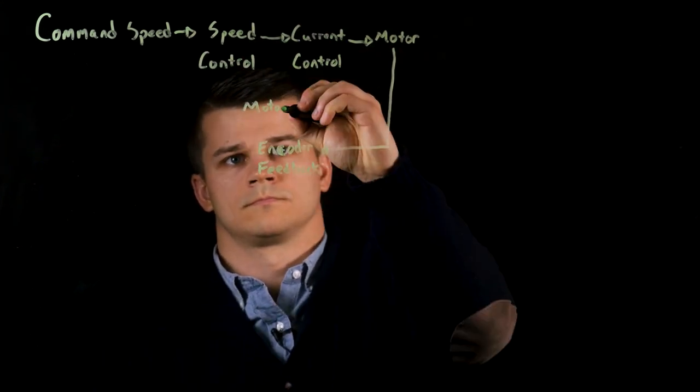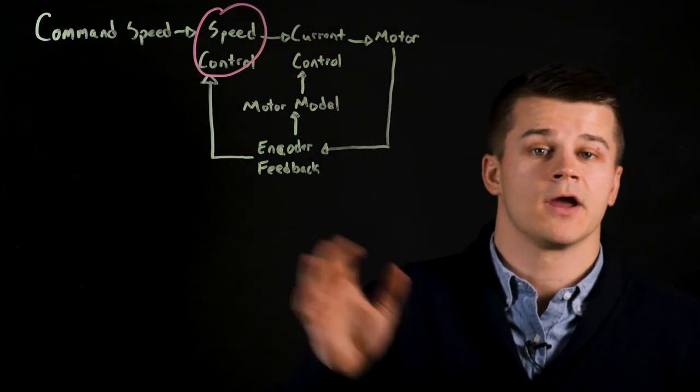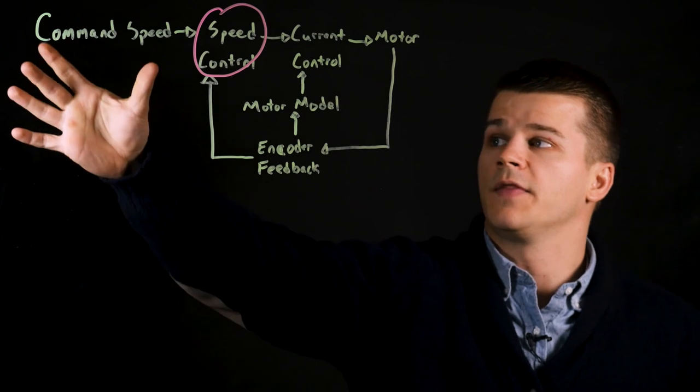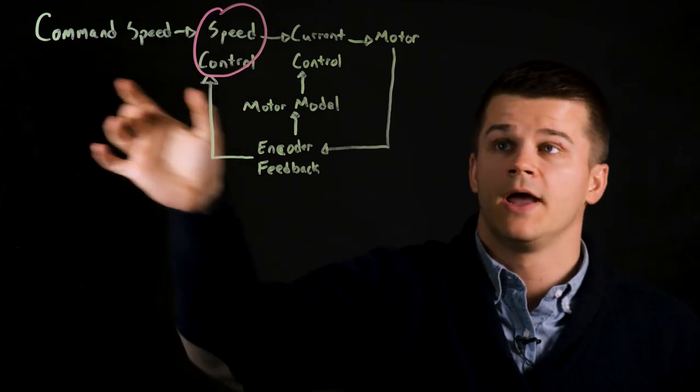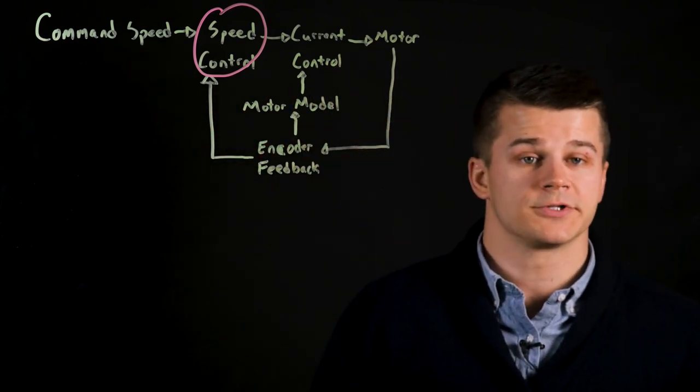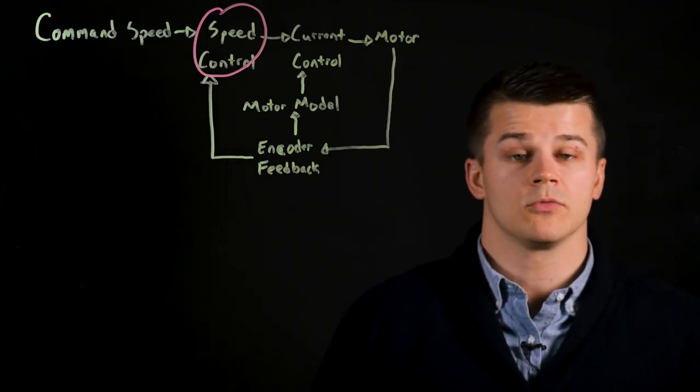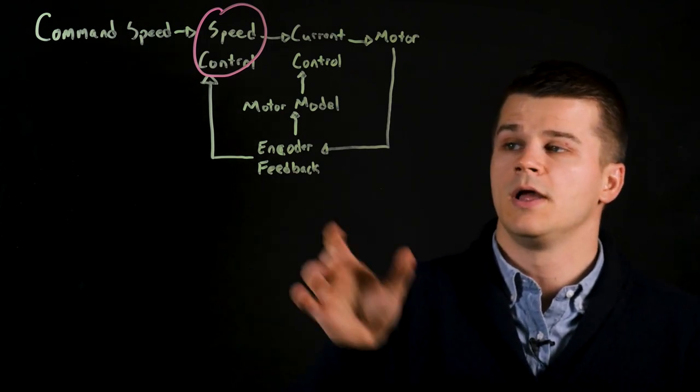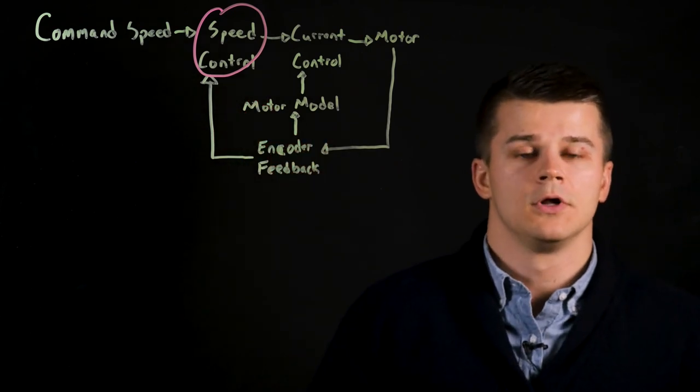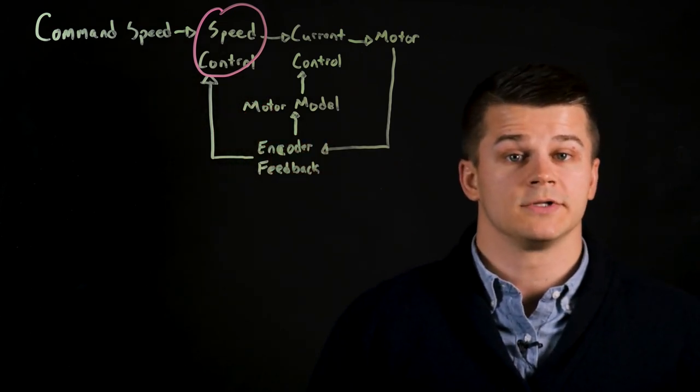You might remember from our past video this is a basic block diagram of closed-loop control. On the input side you have the command speed and on the output side you have the actual output to the motor. The feedback includes the encoder feedback, which can be an incremental or resolver for example, and then you also have the motor model which is the drive's electronic equivalent to the motor.